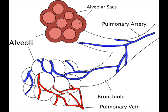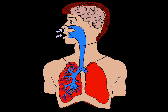Carbon dioxide diffuses into the alveoli from the blood, crossing the capillary endothelium and then the alveoli epithelium. After entering the alveoli space, it is breathed out.